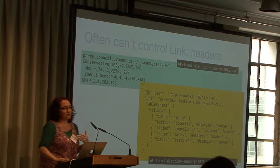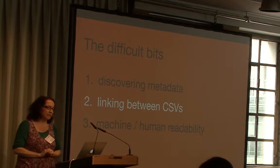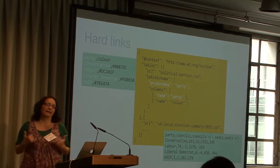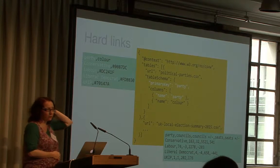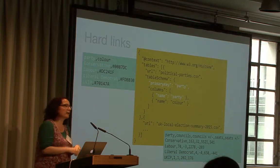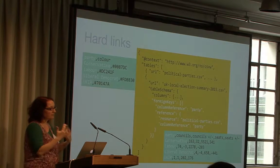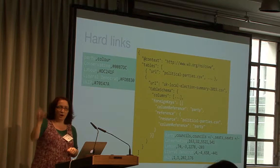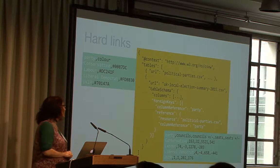So that was about discovering metadata — you can use the link header, and you can use just the default file name. The second thing is about linking between CSVs. You can think of CSVs on the web as being like a relational database. You can specify, for example, in my CSV file where I've got parties and their colors, that the party name is a primary key through which you can reference that particular row.